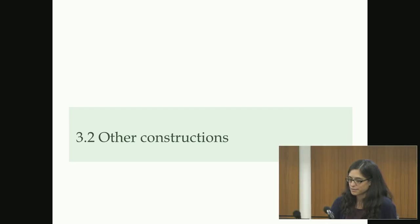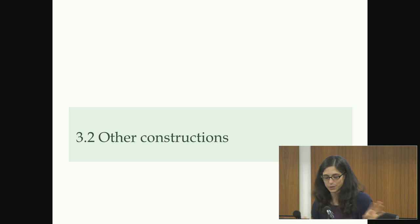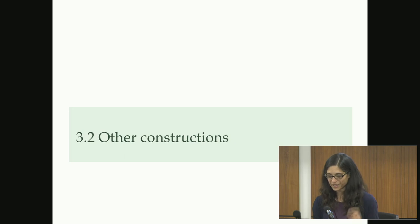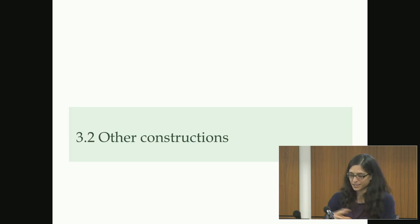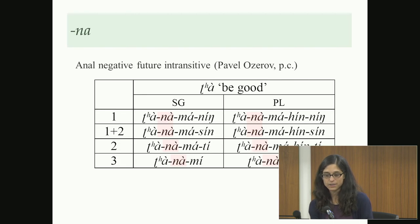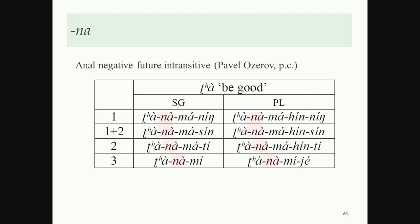We've talked about knee, T/Te, and rong — all quite widespread. Now we come to constructions found in only one or two languages. We have 'na', which is the future marker in Anal, and this must presumably be ultimately related to the non-nominalizer, instrumental applicative, or locative — or perhaps a general nominalizer — though I'm not really sure how they all hang together.